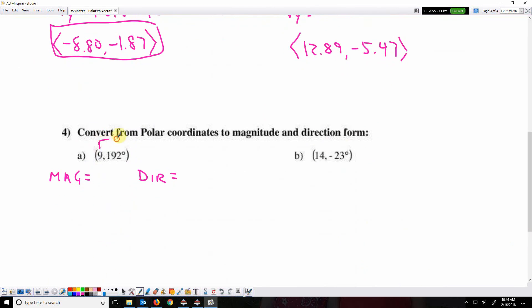So here's r, here's theta, the magnitude is 9, the direction is 192 degrees. The magnitude here is 14, the direction is negative 23 degrees.